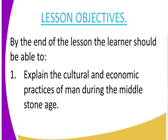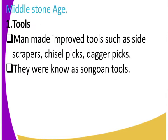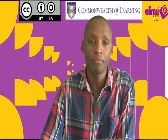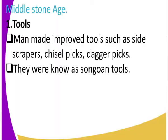Now let us look at the tools they used. Man made improved tools such as the side scrapers, the chisel picks, and the dagger picks. These tools are known as the Sangoan tools. I want to go back to Sangoan tools because when we were introducing early man and the evolutionary stages, we did talk of these Sangoan tools — they were found at a place known as Sango Bay on the shores of Lake Victoria. These are the tools that man made.